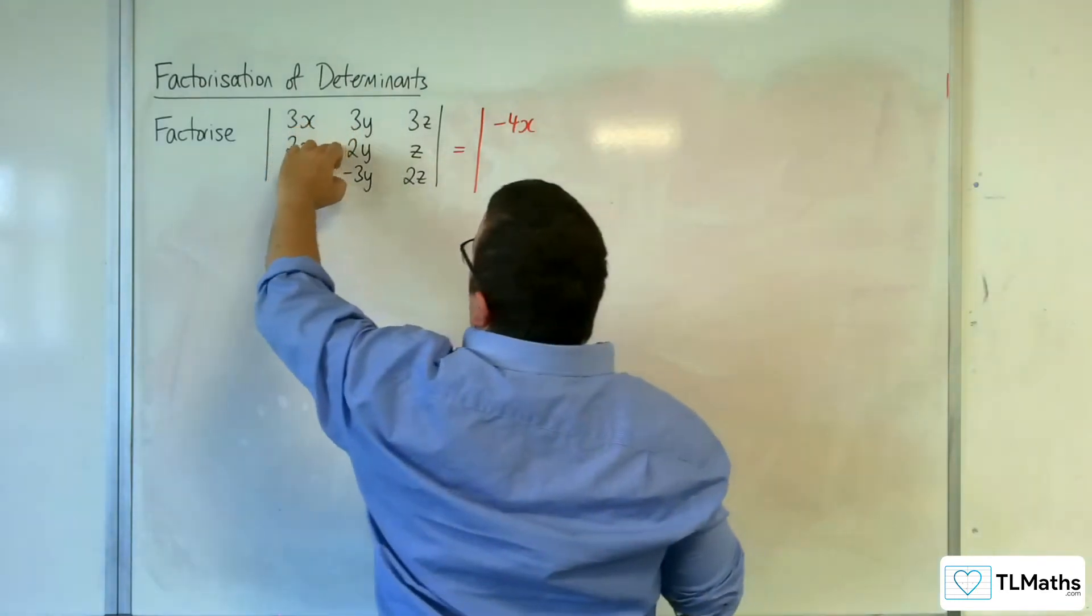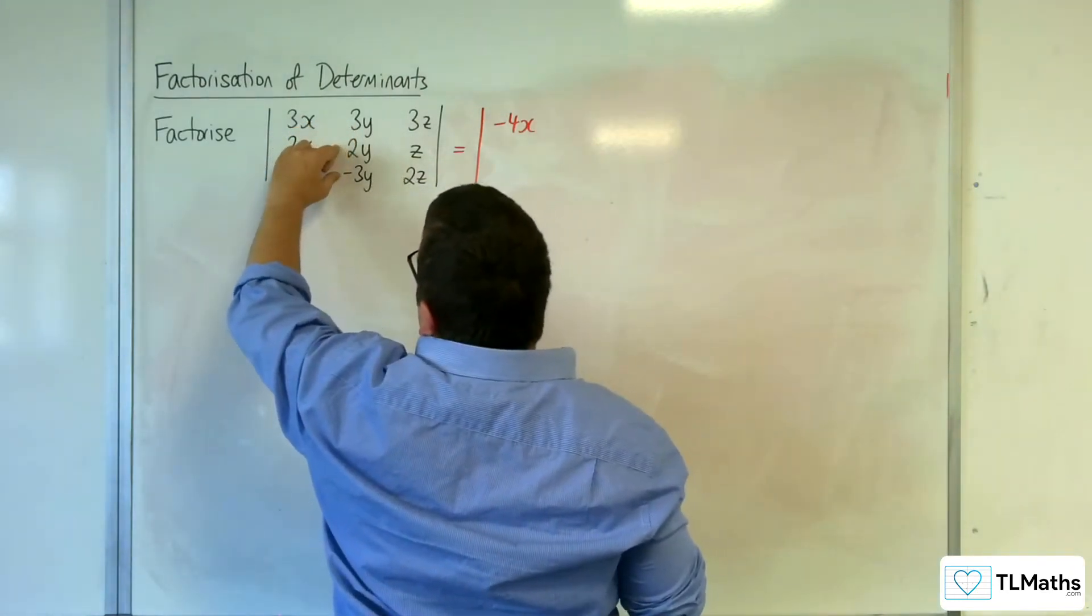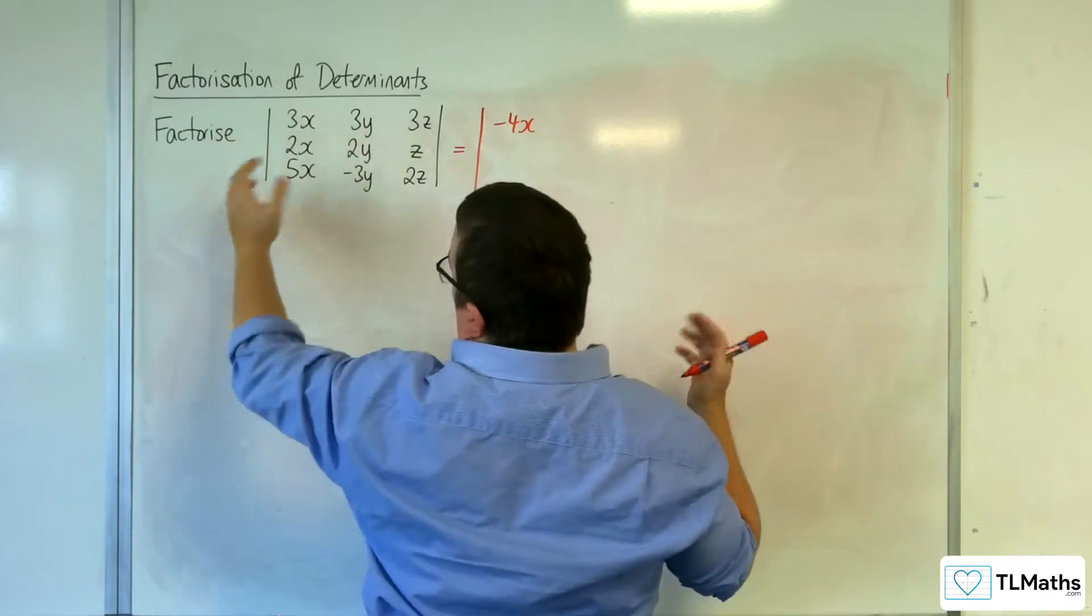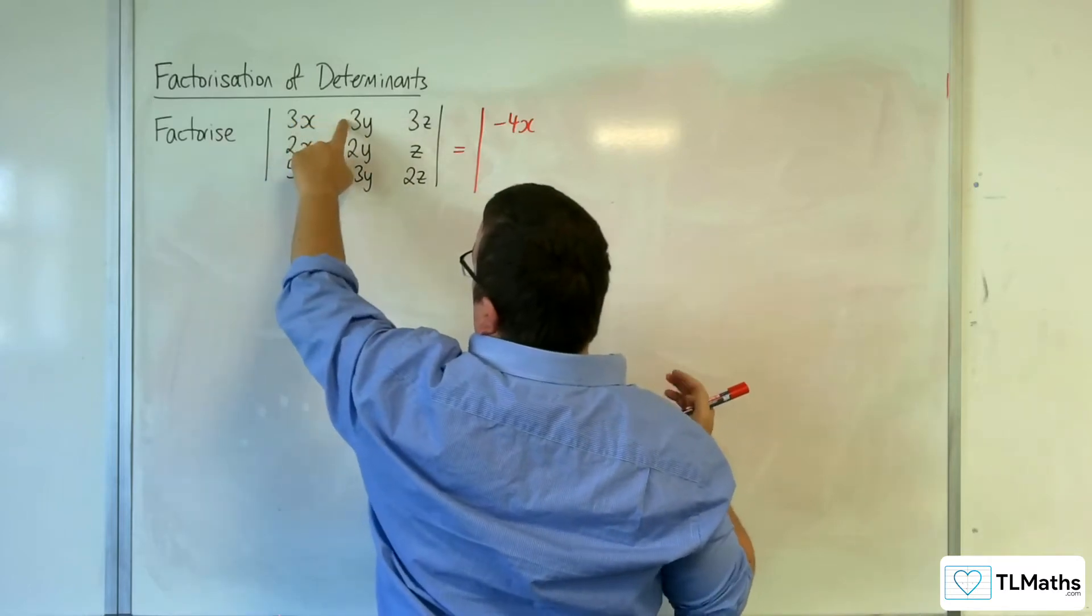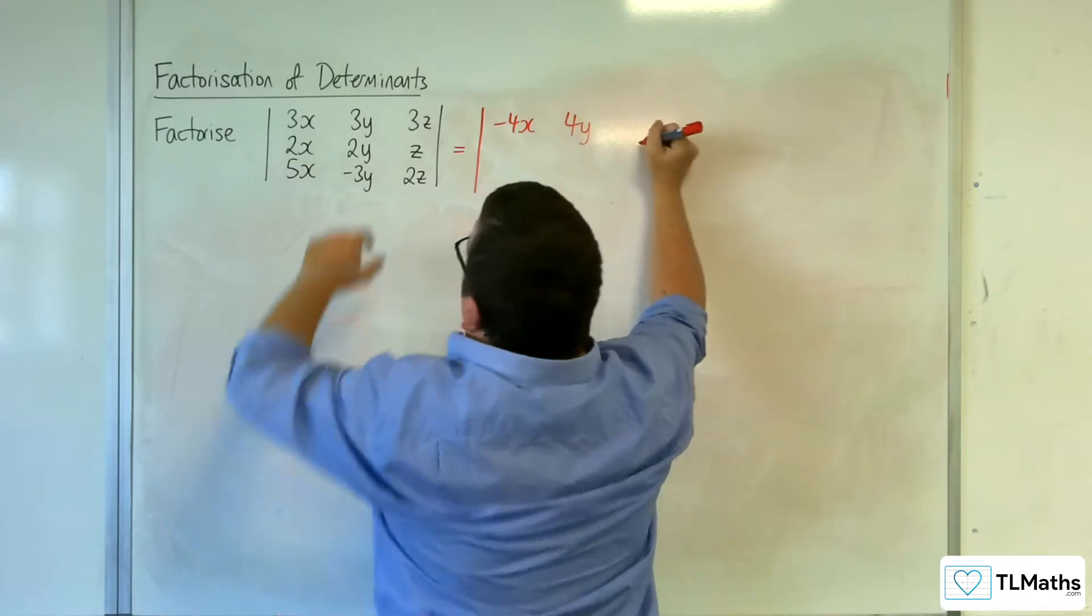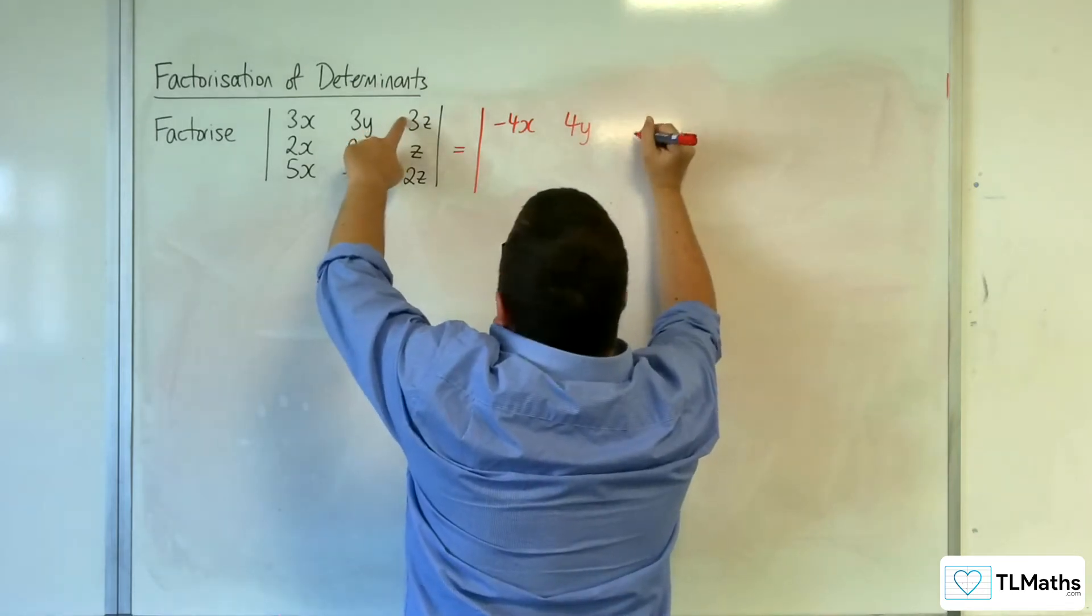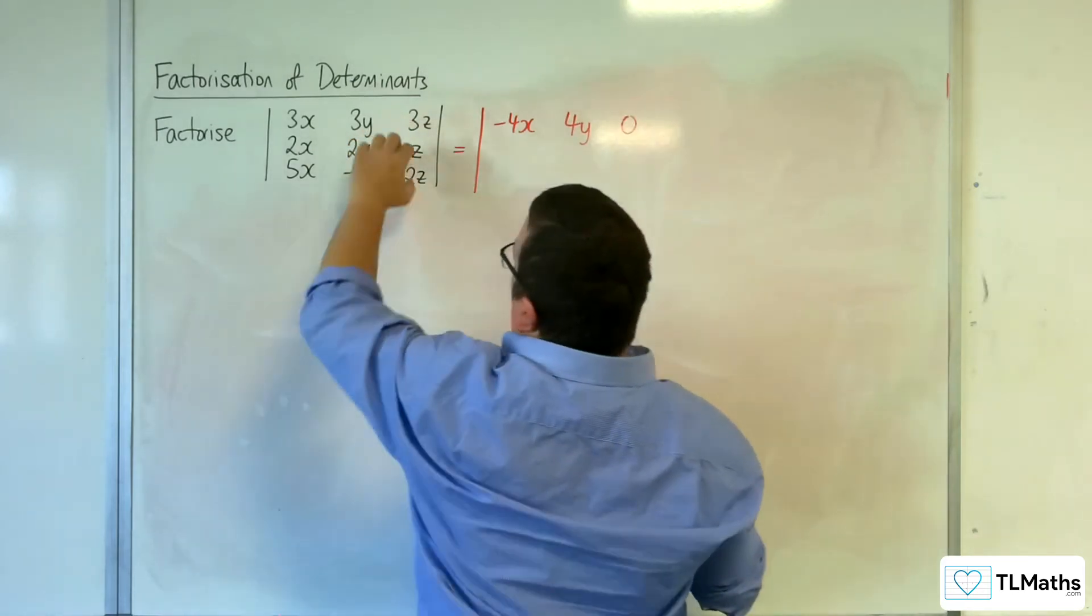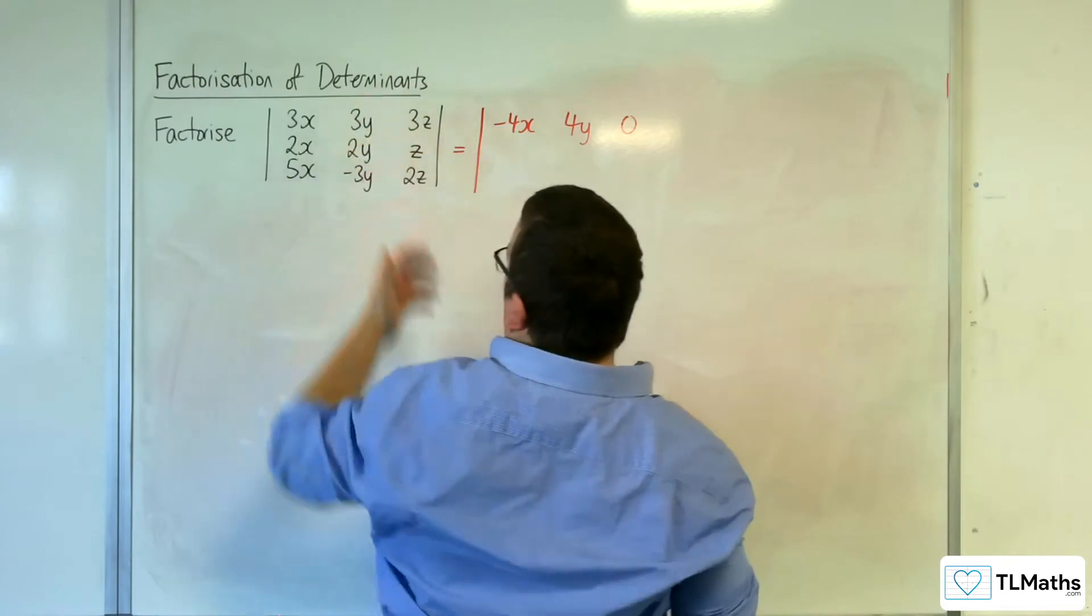Then I've got 2y and minus 3y make minus 1y, so 3y plus 1y will make 4y. Then by design I'm going to get 0 here, because z plus 2z is 3z, subtract it from row 1.